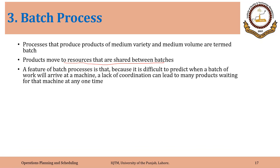A feature of batch processes is that because it is difficult to predict when a batch of work will arrive at a machine, a lack of coordination can lead to many products waiting for that machine at any one time. This is a common issue in both jobbing and batch processes, but especially in batch, we have larger quantities, so queuing or waiting can be a problem because resources are shared between different product categories.